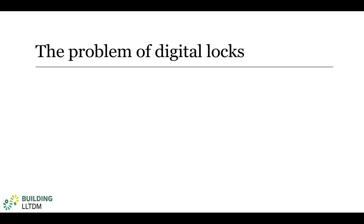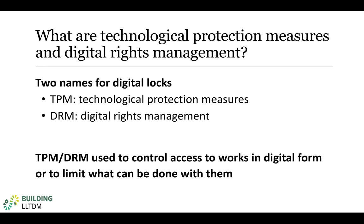Let's begin by talking about the problem of digital locks. The first thing we need to do here is to clarify some terms. Works in digital form may be protected by technological protection measures that control access to copyrighted works. These technological protection measures, or TPMs, are also referred to as digital rights management, or DRM, in some contexts. We're probably just going to use these terms interchangeably, but the simplest way to think about TPM or DRM is to think of it as a digital lock. Like physical locks, digital locks can be used to control access to a thing or to limit what can be done with it.